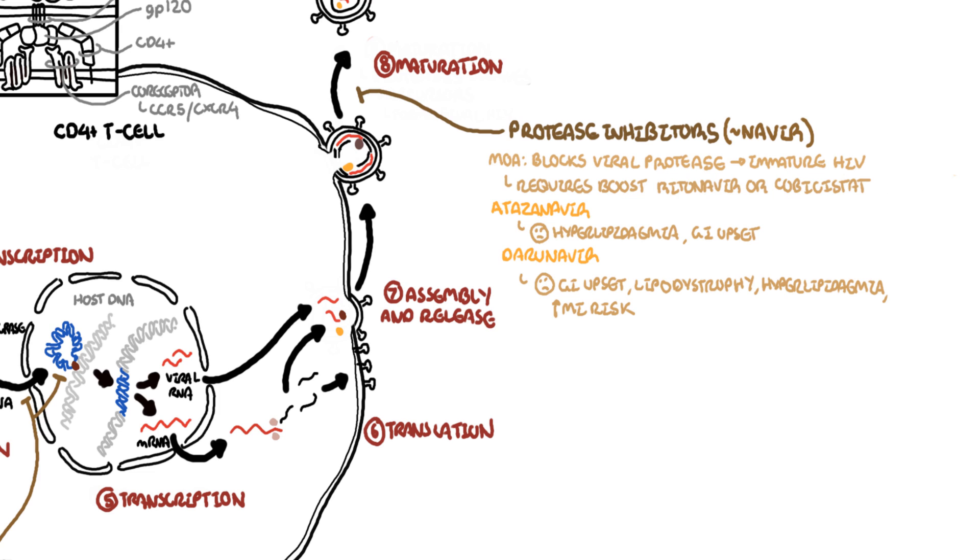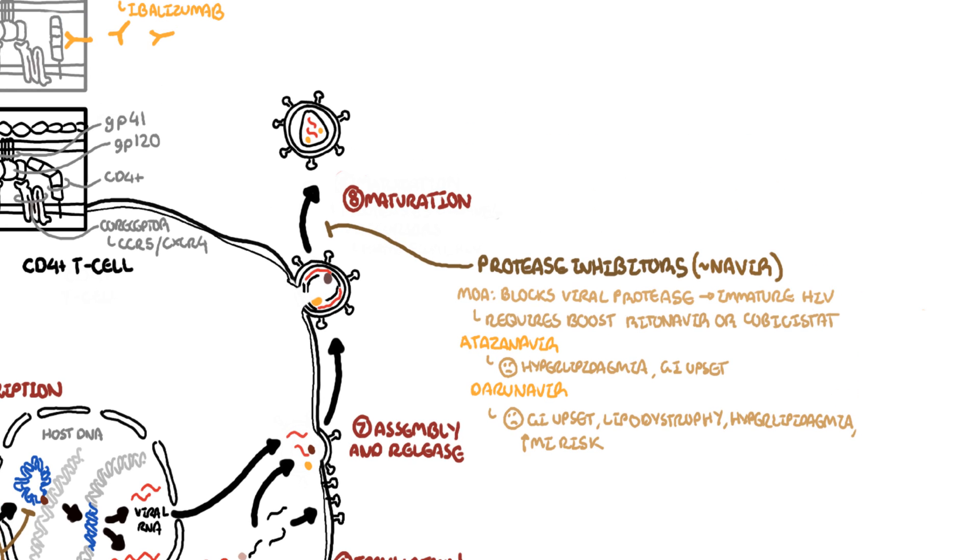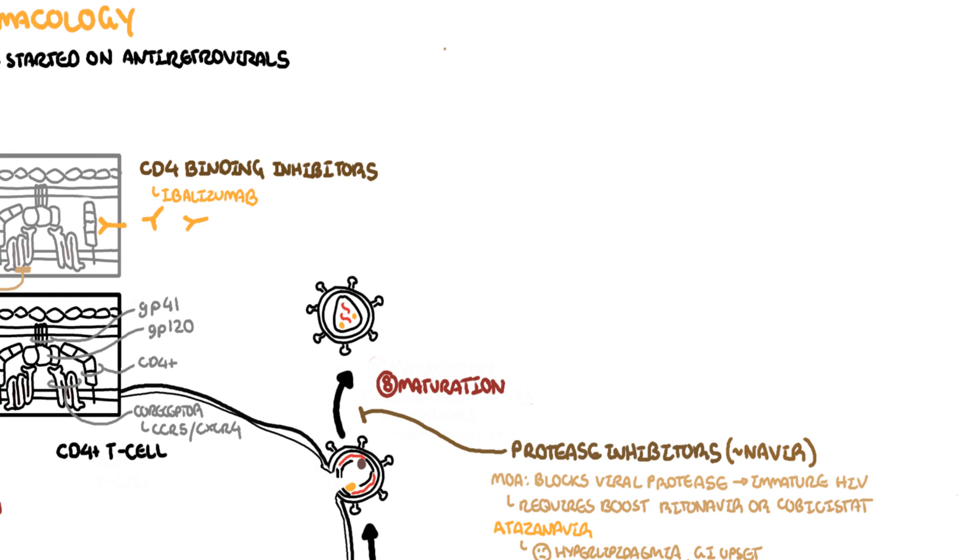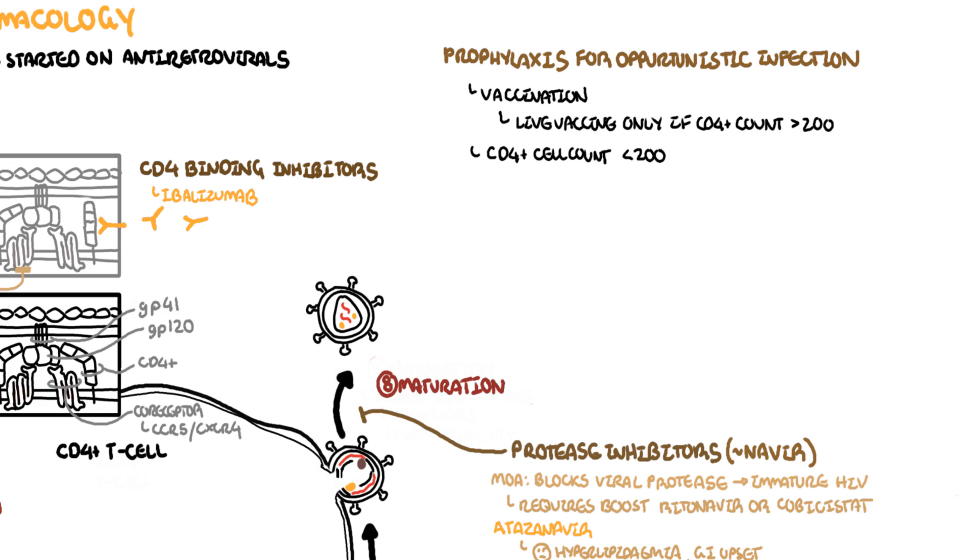So those are some major classes of antiretroviral drugs. Other treatments that patients with HIV require include possibly prophylaxis for opportunistic infections. So vaccination is very important. HIV patients can have live vaccines usually only if the CD4 cell count is greater than 200 cells per millimeter cubed. If the CD4 cell count is less than 200, really they are at risk of a lot of opportunistic infections.